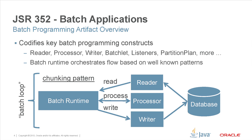The first feature we'll look at is the batch programming artifacts. This introduces and defines a set of key constructs that codify the batch programming model — things like readers, writers, listeners, and many more constructs used to assemble a batch application. A batch runtime then orchestrates the flow across these constructs based on well-known patterns, for example the chunking pattern.